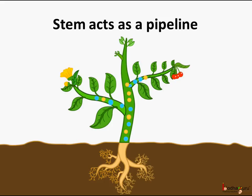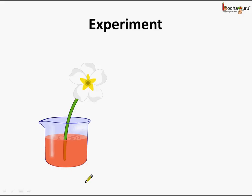How does the stem act as a pipeline? Let us see. Here we have cut a branch of a tree with a flower — or you can say, we take a small herb with a white flower.